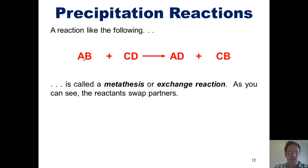Let me explain what I'm talking about. In this kind of reaction, A is supposed to represent a cation and B an anion. C is supposed to represent a different cation and D a different anion. As you scan this reaction equation, you'll note that A is swapping partners with C. So A and D are getting together and C and B are getting together. So this type of reaction is once again called a metathesis or exchange reaction.